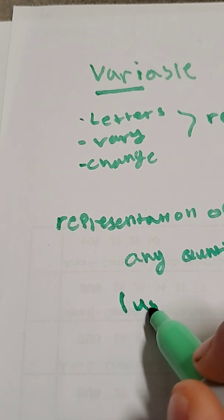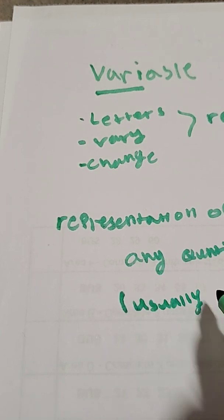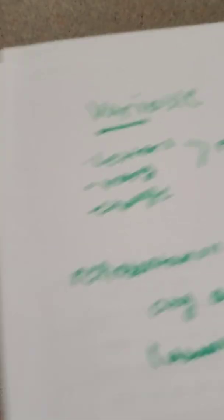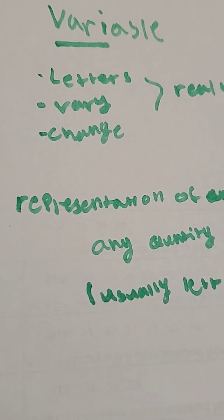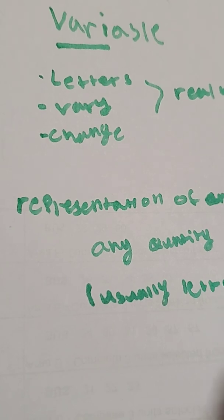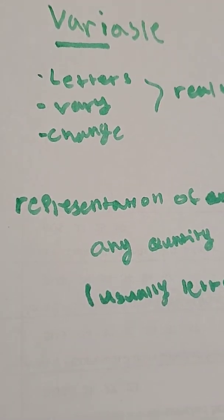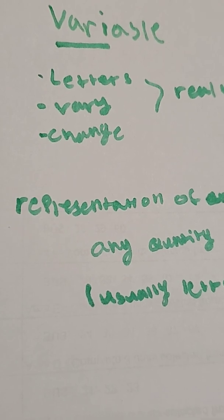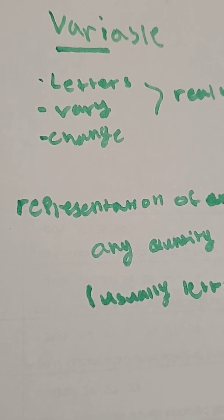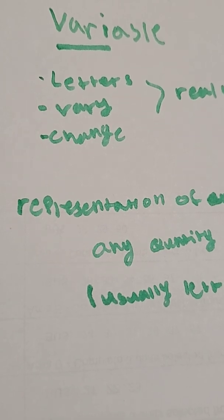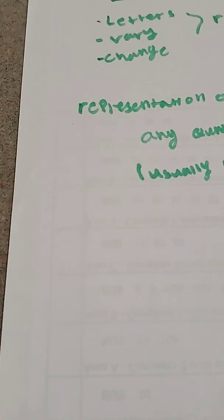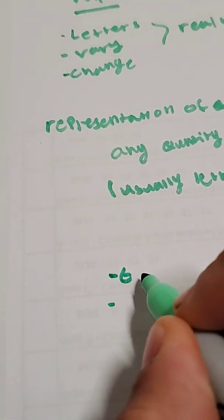A variable is pretty much a representation of any quantity, and we typically denote this with letters. Variables can vary — they can represent anything, whether it's time in physics, a chemical reaction, or money. Basically anything goes.